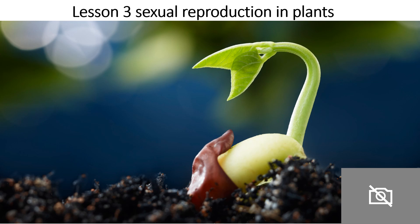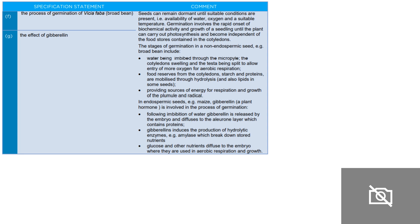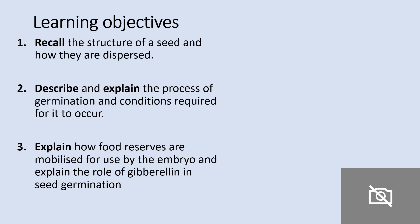Hello and welcome to lesson three, sexual reproduction in plants. These are the spec points we're going to cover in this session. We'd like you to feel confident that you can recall the structure of a seed, how they're dispersed, describe and explain the process of germination and conditions required for it to occur, explain how food reserves are mobilised and used by the embryo, and explain the role of gibberellin in seed germination.